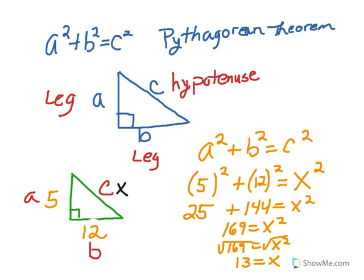Substituting into the Pythagorean theorem, we have that 5 squared plus 12 squared equals x squared. 5 squared is 25. 12 squared is 144. 25 plus 144 is 169 equals x squared.